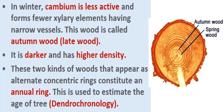These two kinds of wood appear as alternate concentric rings, constituting an annual ring — because both seasons come in a year. Spring wood followed by autumn wood will appear as alternate concentric rings. By counting the number of these concentric rings in a wood, we can count the age of a tree, because these are called annual rings.